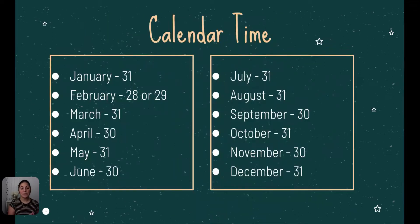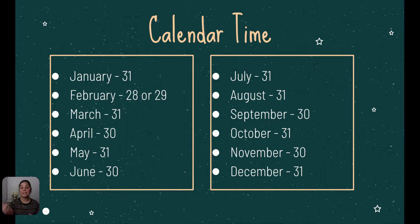We're first going to start with the amount of days in each month. January has 31 days. February has 28 or 29 days — if it is a regular year, there are 28 days, and if it is a leap year, there are 29 days. February is the month that changes depending on whether it's a regular year or a leap year.